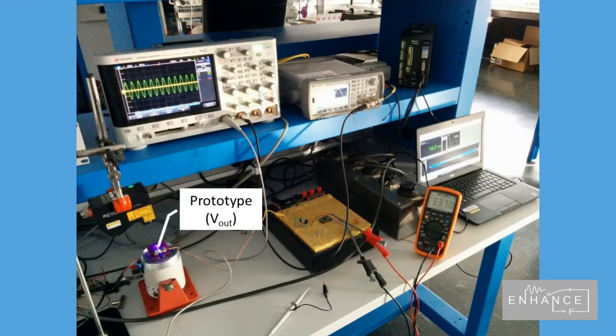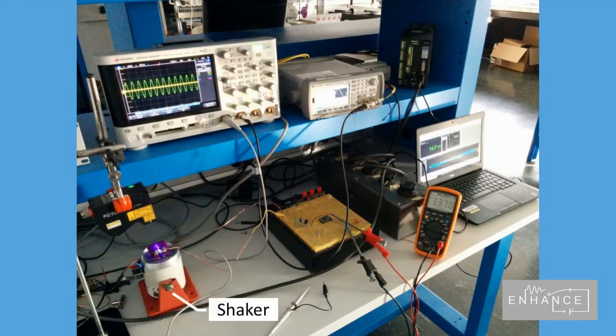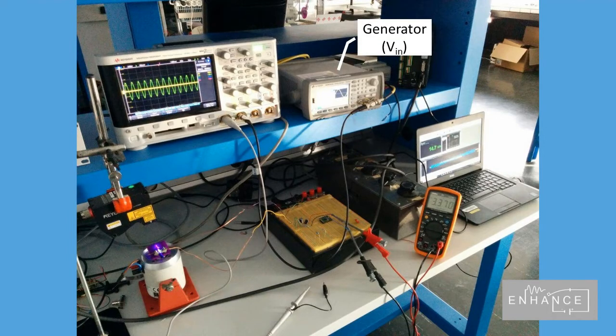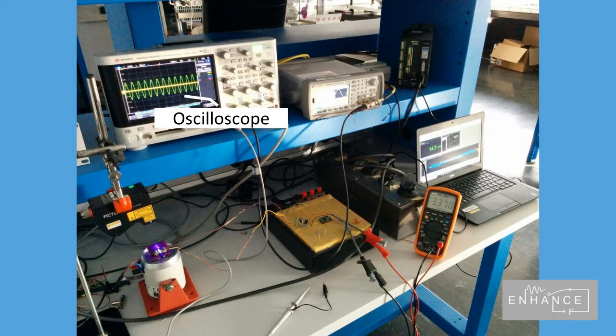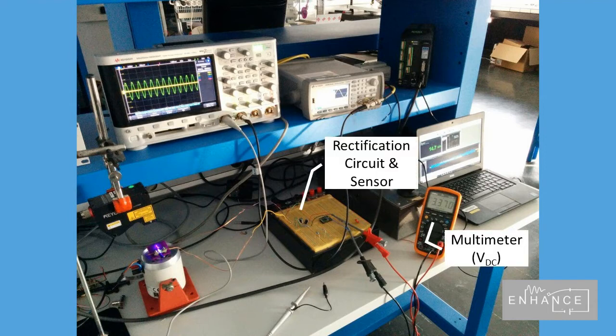This is our setup to test the prototype. What we need is a shaker that is a tool to simulate the vibrations, a voltage generator to activate the shaker with an input sinusoidal wave, an oscilloscope to keep track of voltage input from the generator and the output from the prototype, and at last a circuit that is converting the voltage from AC to DC. The DC voltage eventually will power up our radio frequency sensor.